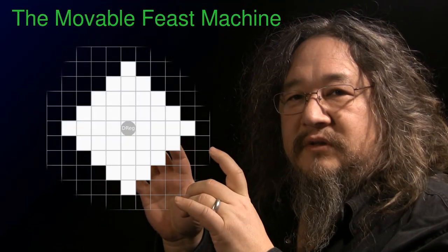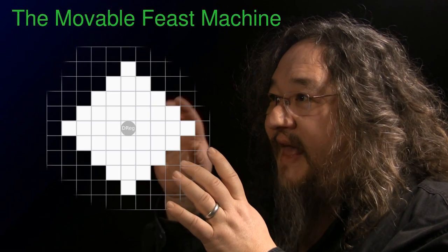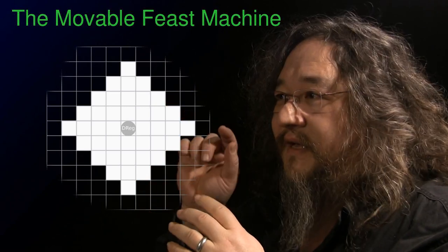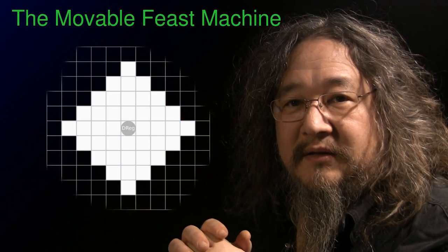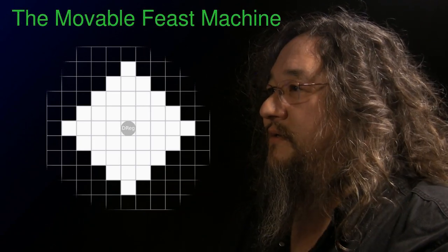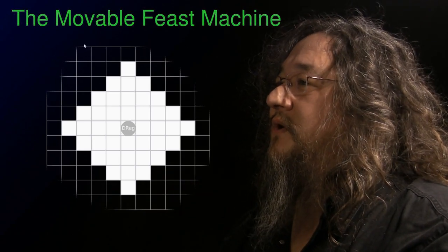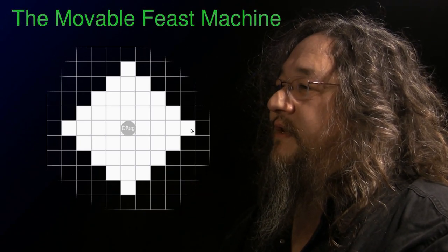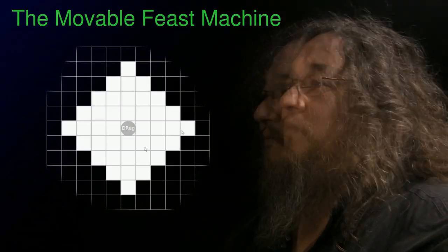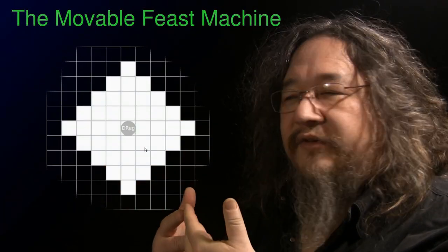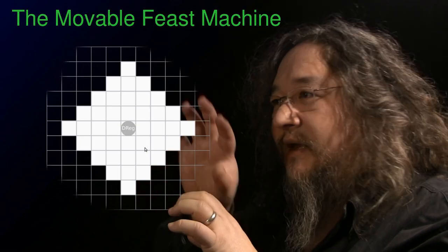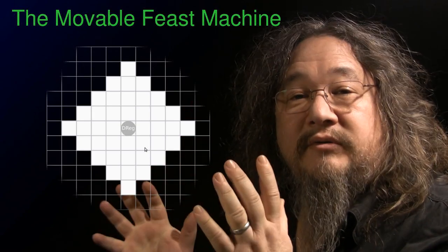This diamond shape is called the Event Window. That is the limits of the number of sites that this guy, in the middle, can access when he executes. So there's 41 sites total. They are all within a distance of four, counting city block distance. When this guy in the center is executing, he can read and write to the event window arbitrarily.